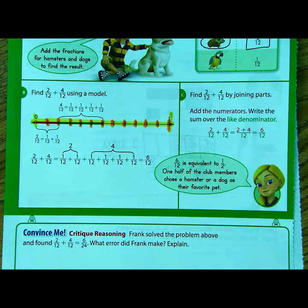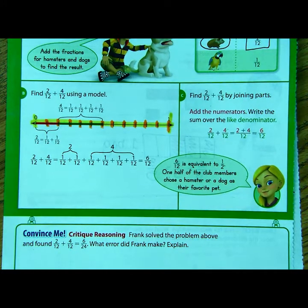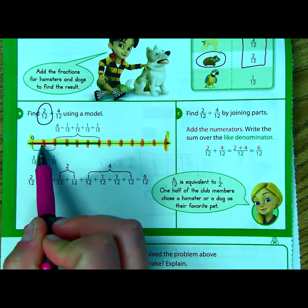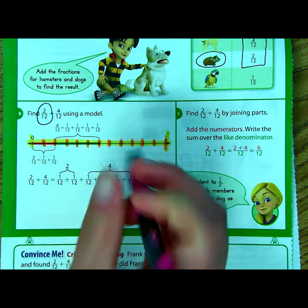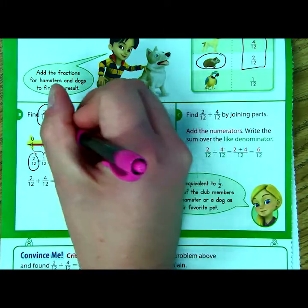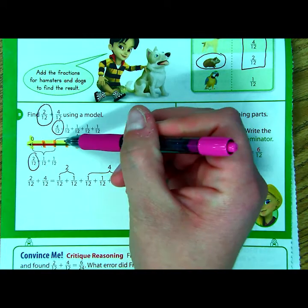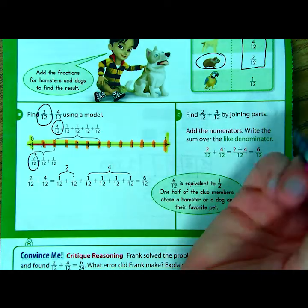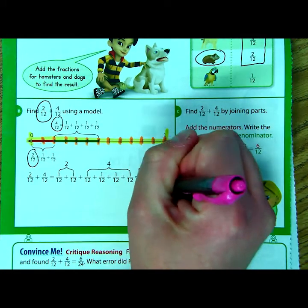So we are working with twelfths. So what they are showing us on this number line is going to be the two-twelfths, right here. And you can see there's one, two twelfths. So that's what they're showing you right here, plus the four twelfths. One, two, three, and four. When you add those together, you get a total of six twelfths.